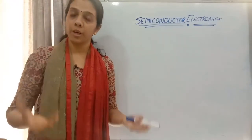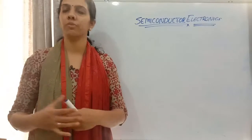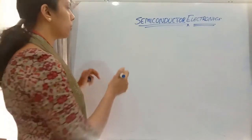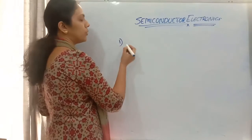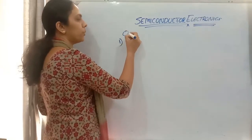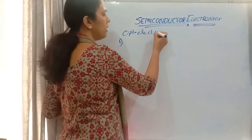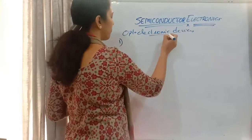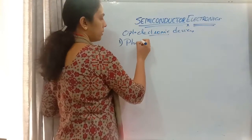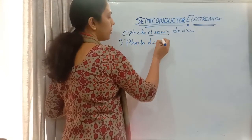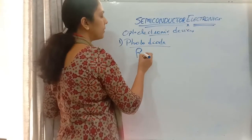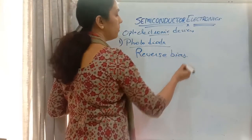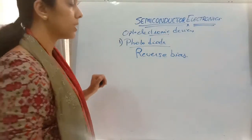We are going to study about some of the devices where we use light, or the production of light, or using light for the production of current. The first optoelectronic device we are learning is the photodiode. A photodiode is a PN junction diode which is working under reverse bias.